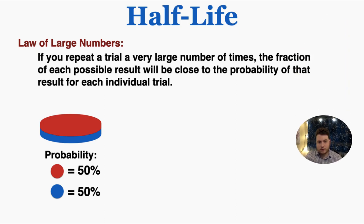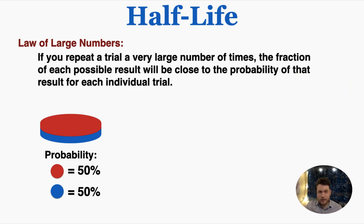To understand random processes like radioactive material, we use an idea called the law of large numbers, which says if you repeat a trial a very large number of times, the fraction of each possible result will be close to the probability of that result for each individual trial.